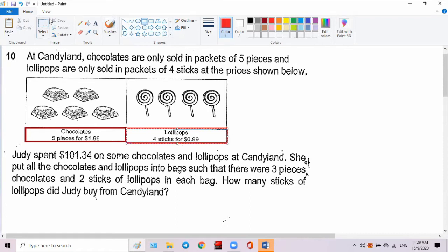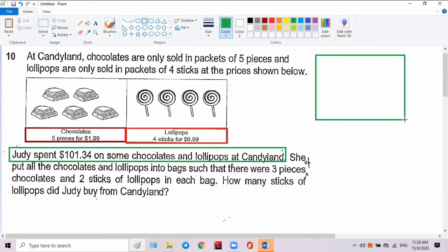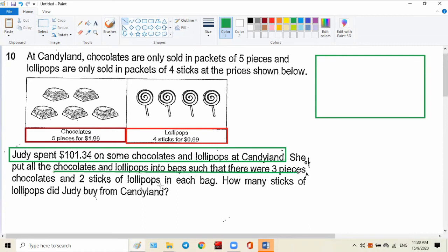So the first step to solve the problem is to really understand the question. You can't fight an enemy when you don't understand them. She spends a total of $101.34 on some chocolates and lollipops at this Candyland. Now, here is the new requirement. This requirement is very important in the sense that she put all the chocolates and lollipops into bags such that each bag must have three pieces of chocolate and two sticks of lollipops in each bag.